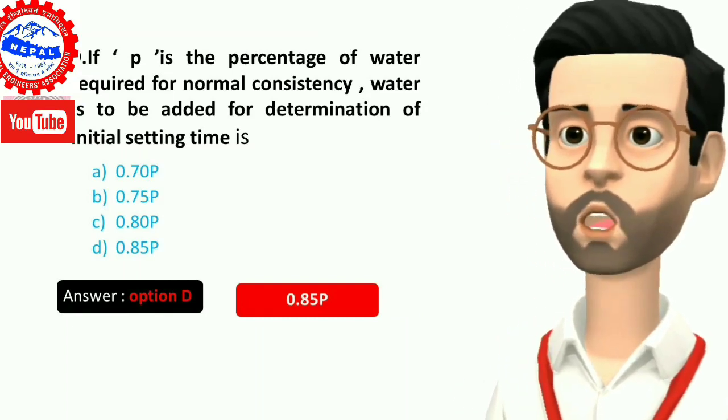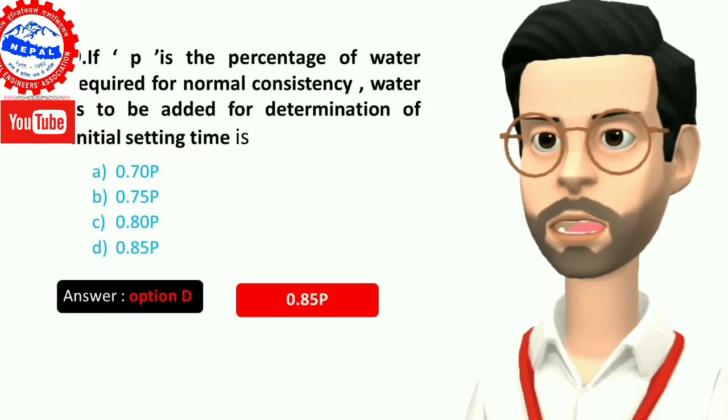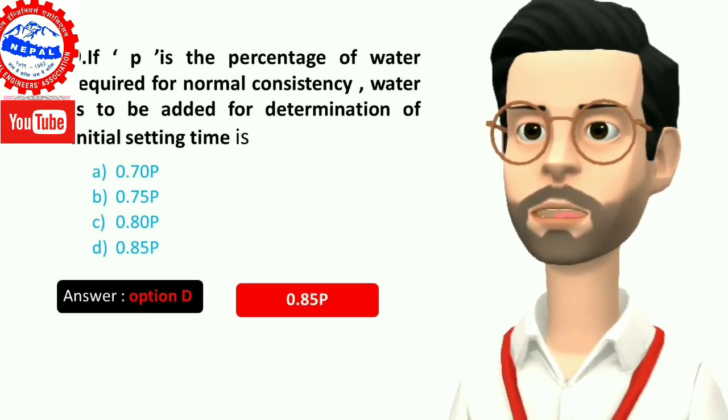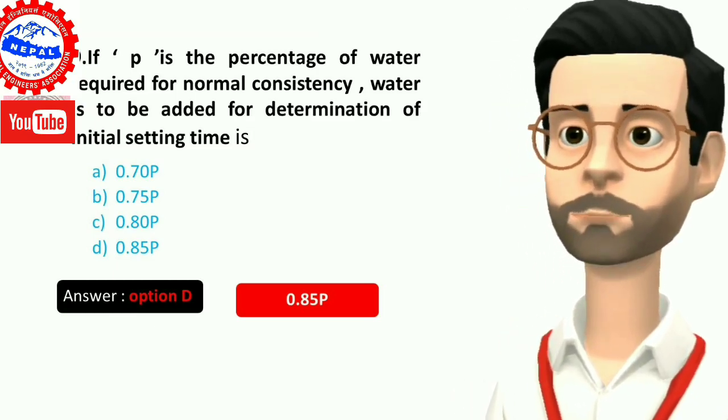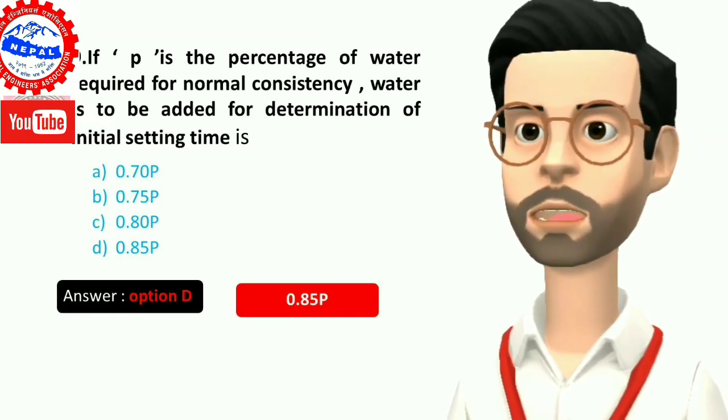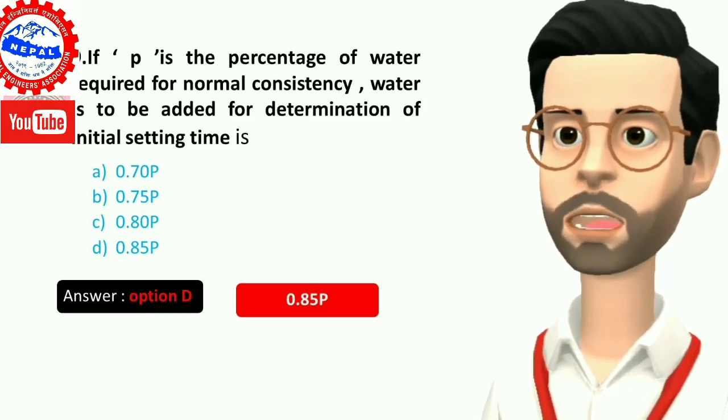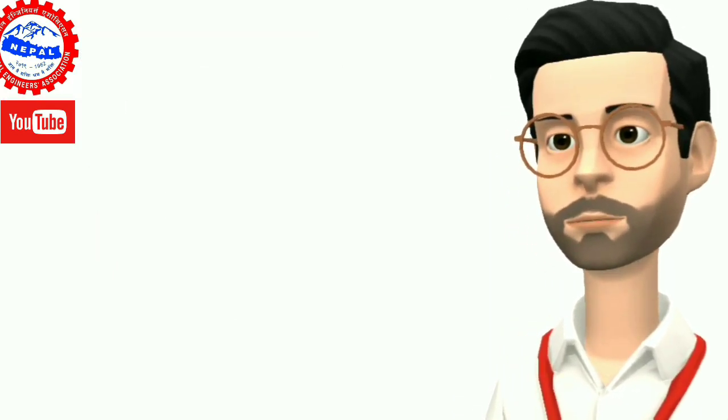Nine, if P is the percentage of water required for normal consistency, water to be added for determination of initial setting time is: A) 0.70P, B) 0.75P, C) 0.80P, D) 0.85P. Answer is option D, 0.85P.